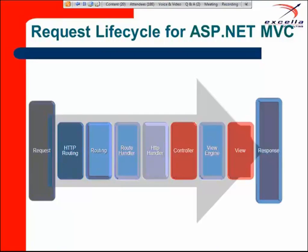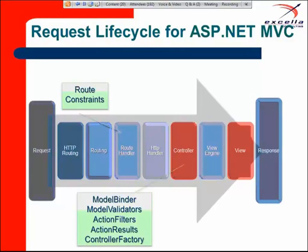This is the agenda for the presentation — we're going to tackle the different extensibility points from left to right in the execution pipeline. From the routing engine perspective, we'll implement custom routes that define how a request maps to a controller, and enforce custom constraints on those routes for more granular control. From the controller perspective, we'll modify how controllers get instantiated — probably writing our own controller factory to define how the controller and its dependencies are instantiated.